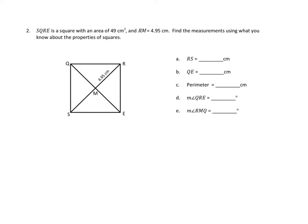Problem number 2 asks us to do the following. SQRE, which is the figure here, is a square with an area of 49 centimeters squared. And RM — that's this segment — is 4 and 95 hundredths centimeters, and they've labeled it right there. Find the measurements using what you know about the properties of squares. They've given us all of these to think about.